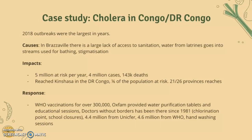Impacts: 5 million are at risk per year, there have been 4 million cases in these areas, and 143,000 deaths. The disease reached Kinshasa, the capital of the DRC, right next to the Congo, and one sixth of the population are at risk. 21 out of 26 provinces were reached. The response includes WHO vaccinations for over 300,000 people, and Oxfam providing water purification tablets and educational sessions about the disease.